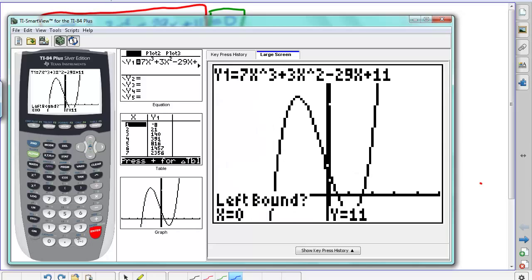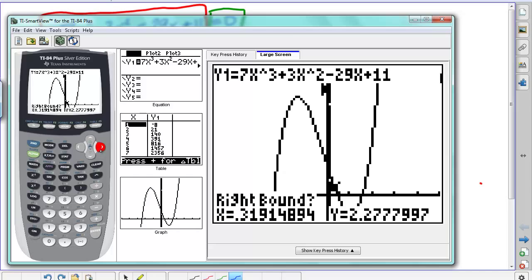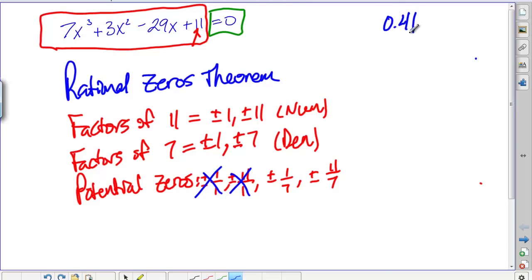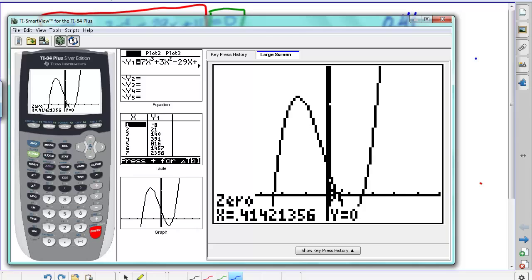So if I want to look at the one in the middle there, I could say that's my left bound, and then go to the right side of that zero, and I get 0.41. That's one of the zeros there, and you'll see why this is useful here in a second.